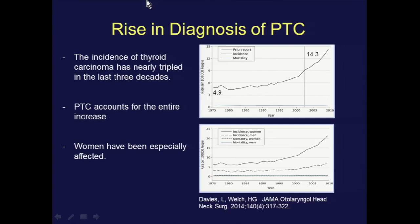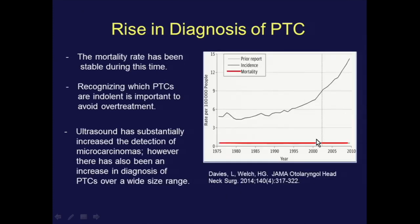The incidence of thyroid carcinoma has basically tripled in the last three decades, and papillary thyroid carcinoma is responsible for this entire increase. While this has affected both men and women, the uptick is much more rapid in women. At the same time, the mortality rate has been static, indicating that many of these tumors are indolent — and recognizing which papillary thyroid carcinomas are indolent is really important to avoid overtreatment.